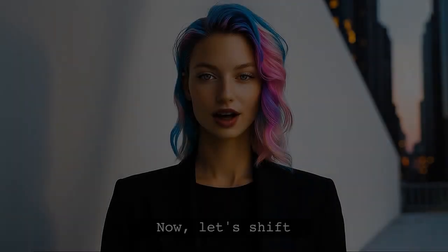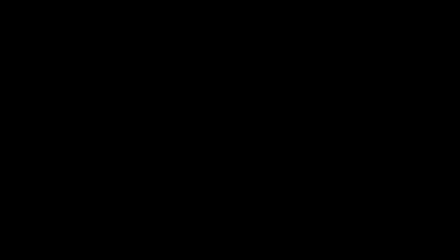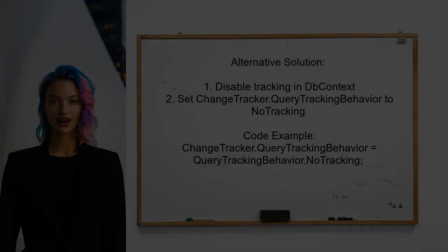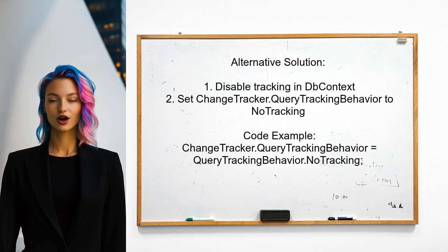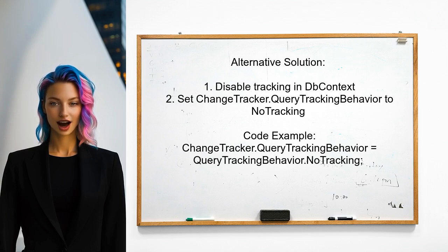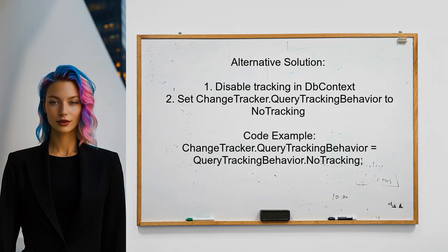Now, let's shift our focus to a different response. An alternative approach suggested by a user is to disable tracking in your DB context. This can be done by setting the change tracker's query tracking behavior to no tracking. This may help improve the performance of your bulk insert operation.